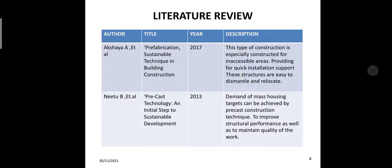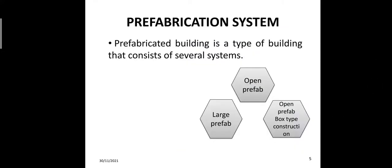Prefabrication system: a prefabricated building is a type of building that consists of several systems — large prefabrication, open prefabrication, and box construction.